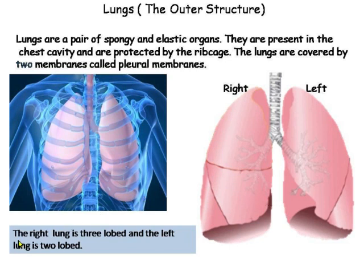The right lung is three lobed — one, two, three. And the left lung is two lobed — only two lobes are there, one and two.